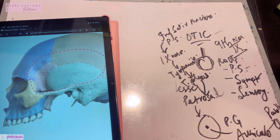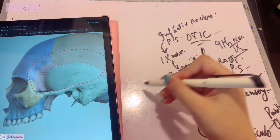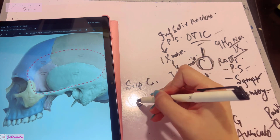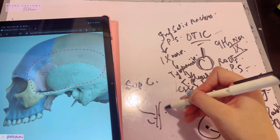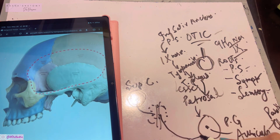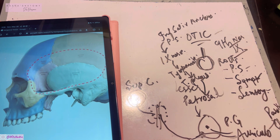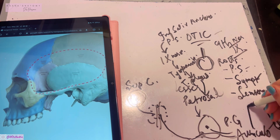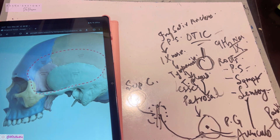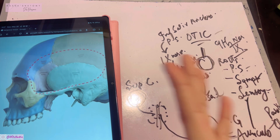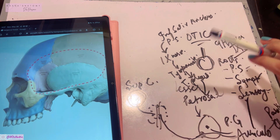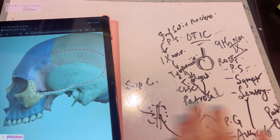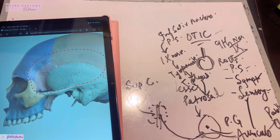The sympathetic root comes from the superior cervical ganglion as post-ganglionic fibers. These join the plexus around the middle meningeal artery, pass through the otic ganglion without relaying, and travel via the auriculotemporal nerve to the parotid gland. The sensory root comes from the auriculotemporal nerve itself. Additionally, the nerve to medial pterygoid carries motor fibers passing through this ganglion to the tensor veli palatini and tensor tympani muscles, and the chorda tympani nerve is also connected to this ganglion.